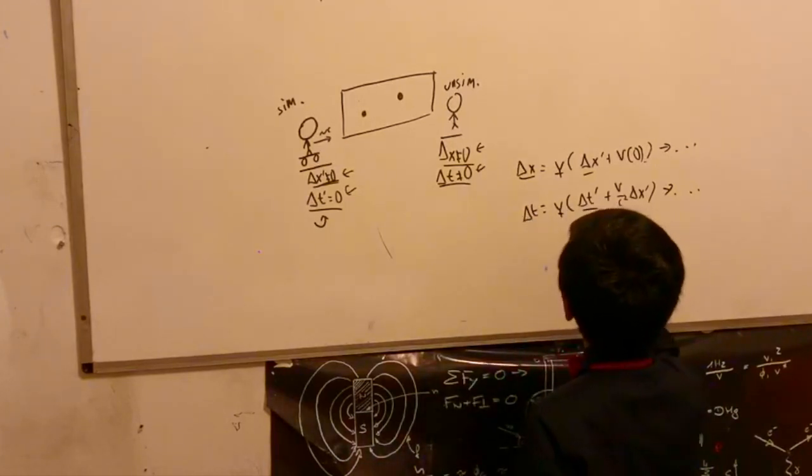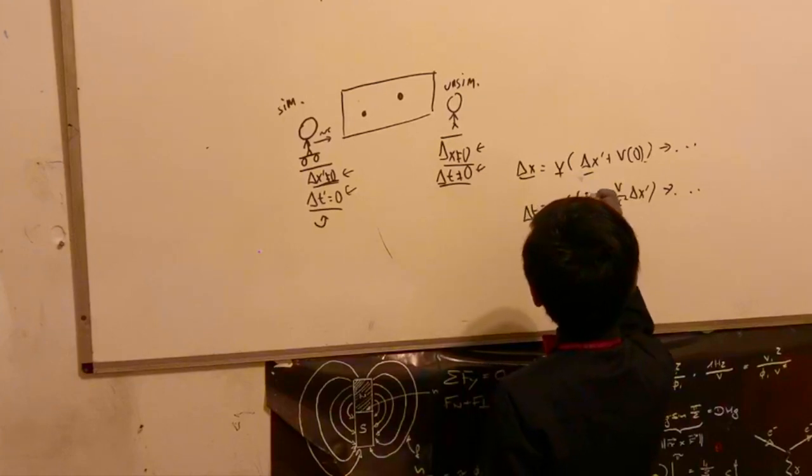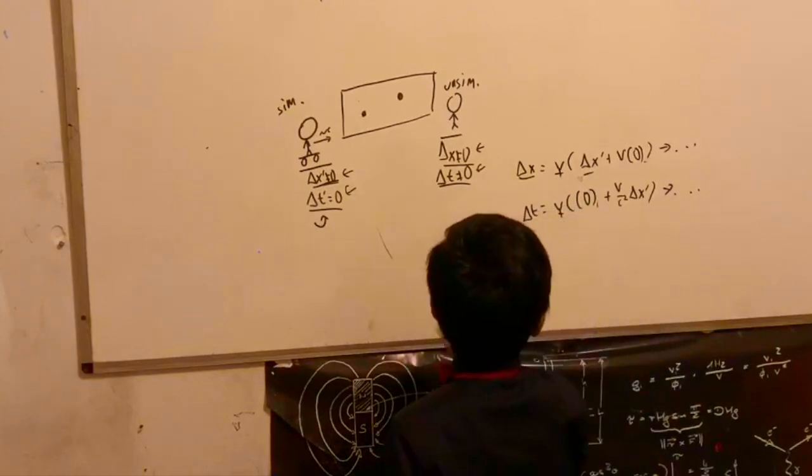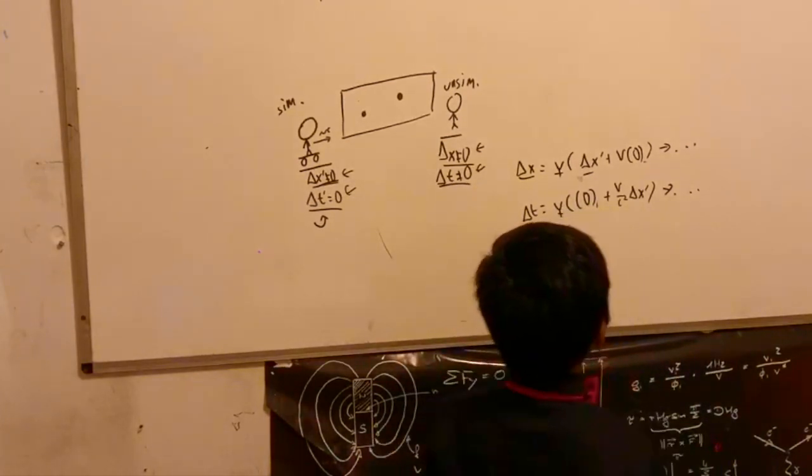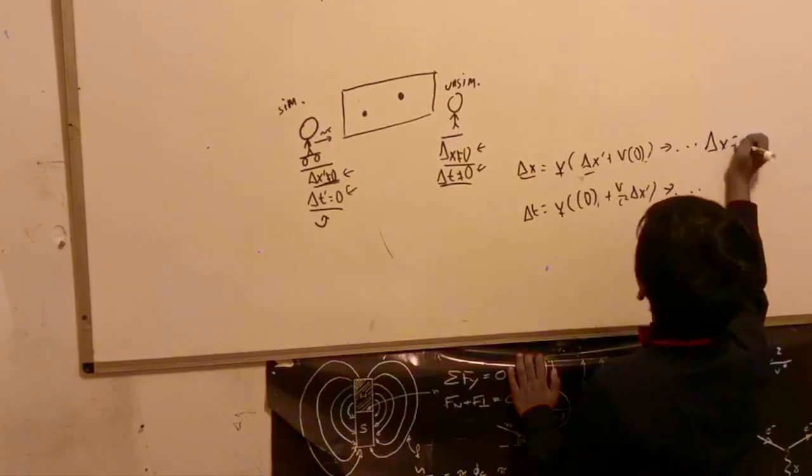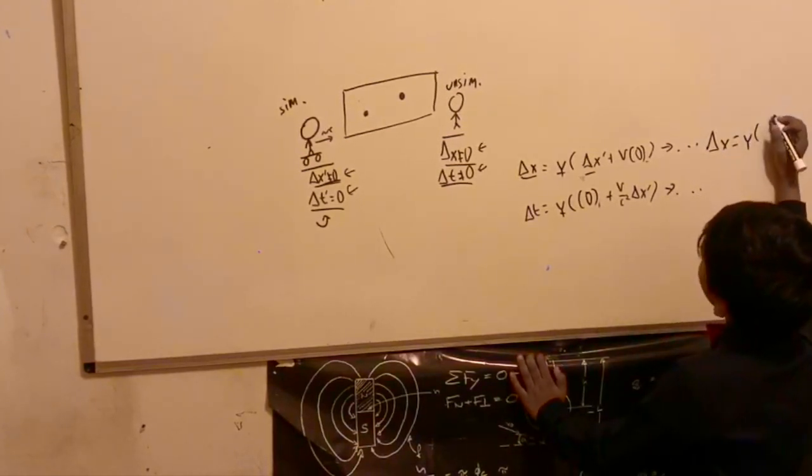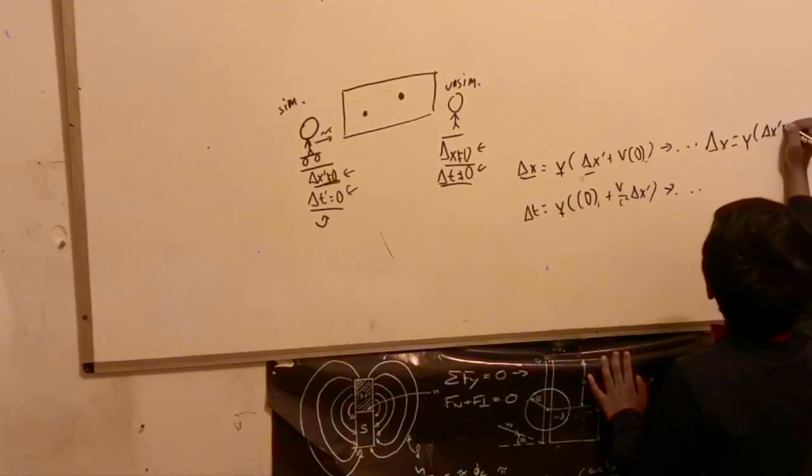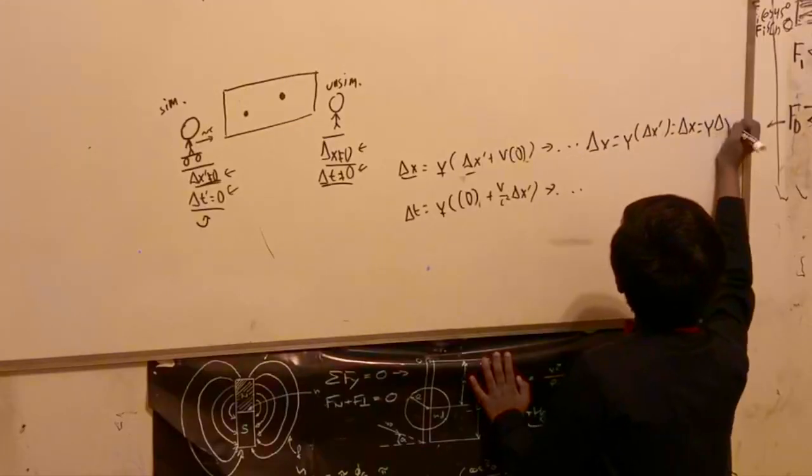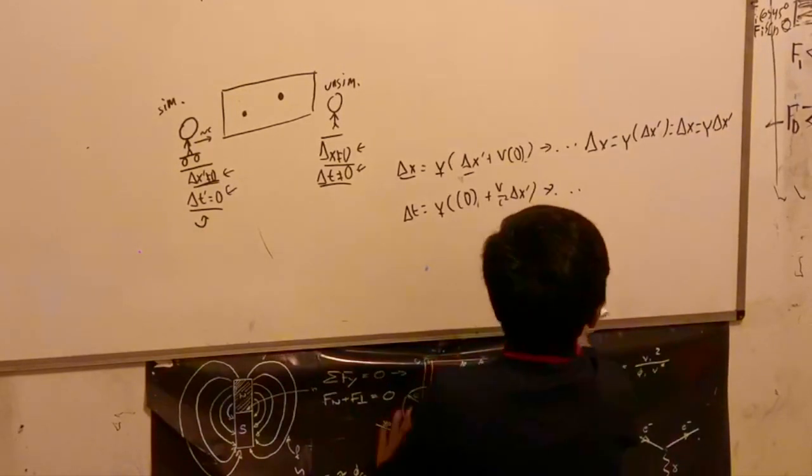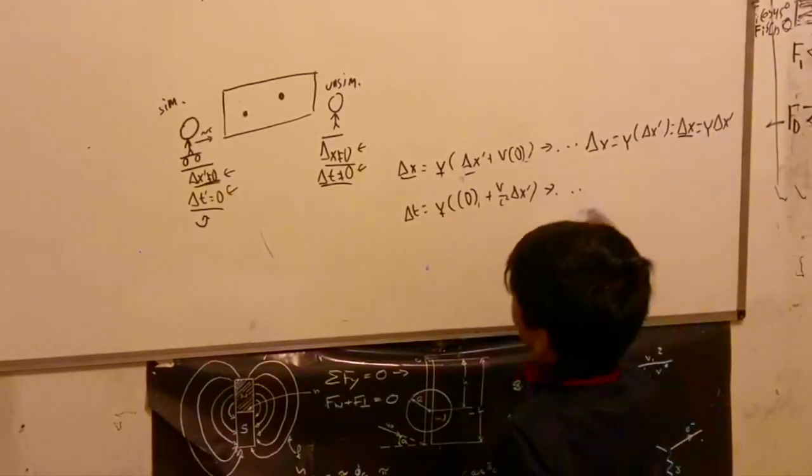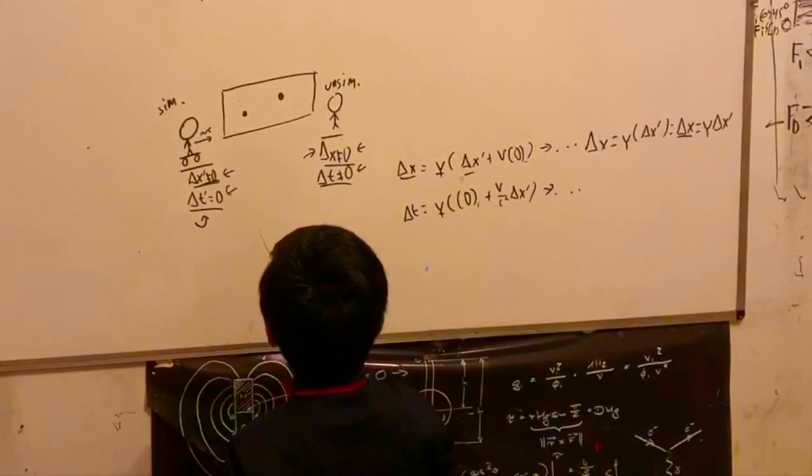We have gamma, then delta t prime is going to be equal to zero, and then we have v over c squared delta x prime which is not equal to zero. Now we can simplify these. This will simplify because delta x is equal to gamma delta x prime, which is not going to be equal to zero at all, which confirms our observations that delta x is not equal to zero.